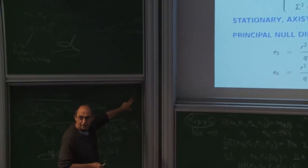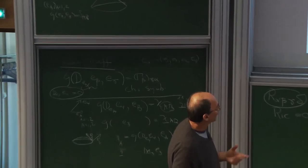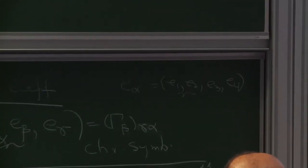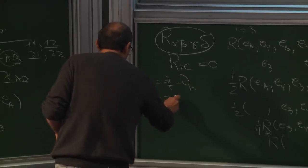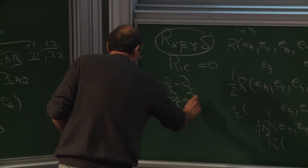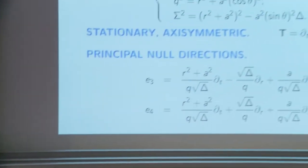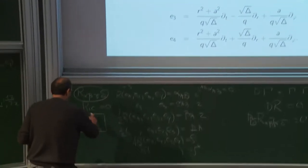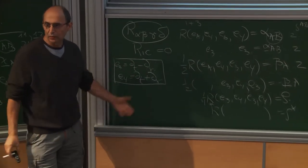In Kerr, this is the null pair of interest. In Minkowski space (a and m equal zero), e3 is precisely dt minus dr and e4 is dt plus dr — the simple null directions important for understanding radiation of linear equations in Minkowski space.